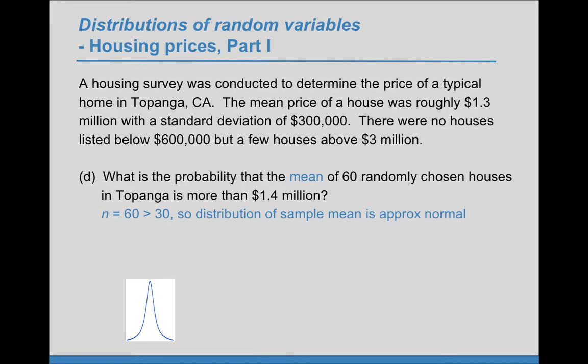So now we need the mean and the standard deviation of this distribution. Using this notation here, we know that the mean of the sampling distribution should just be the mean of the population, centered on the same value, so that's the $1,300,000.